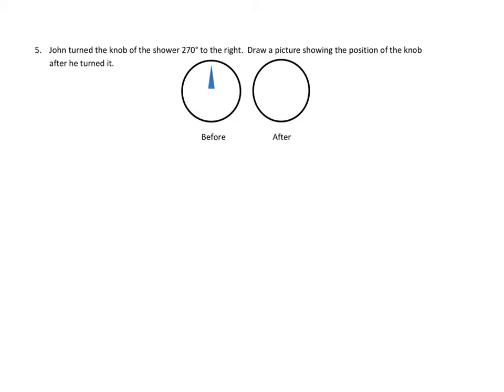Now, this problem asks the following. Let's read along together. John turned the knob of the shower 270 degrees to the right. Draw a picture showing the position of the knob after he turned it.